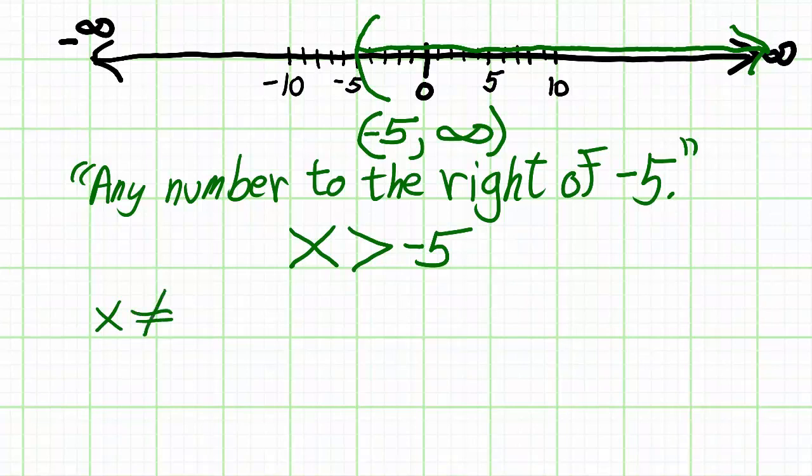So, x cannot equal negative 5 itself. It can only equal numbers to the right of negative 5. This is called a strict inequality.